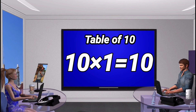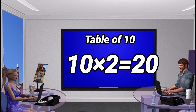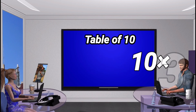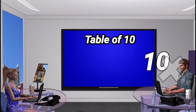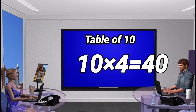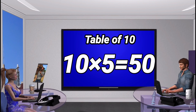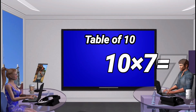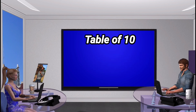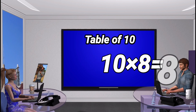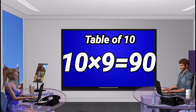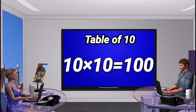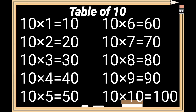Table of 10. 10 times 1 is 10. 10 times 2 is 20. 10 times 3 is 30. 10 times 4 is 40. 10 times 5 is 50. 10 times 6 is 60. 10 times 7 is 70. 10 times 8 is 80. 10 times 9 is 90. 10 times 10 is 100.